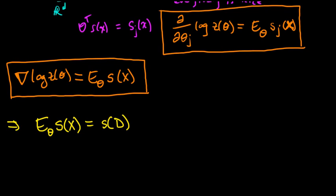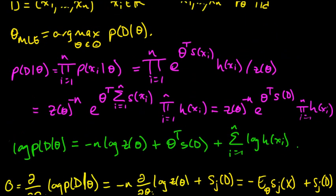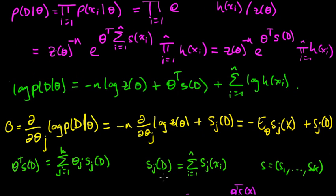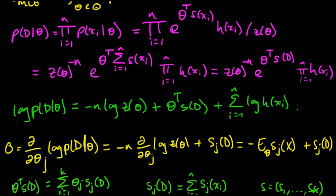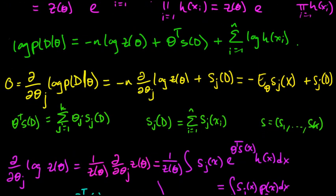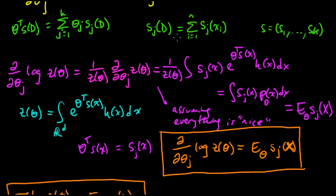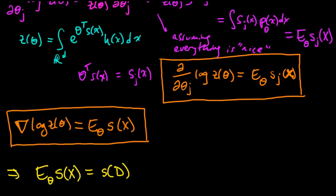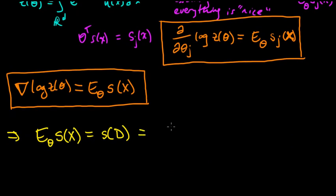And what's s of d? s of d was, by definition, that was just our little shorthand. I guess maybe I didn't define s of d. s of d is just the sum of the s of x's. So this is the sum as i goes from 1 to n of s of little x_i.